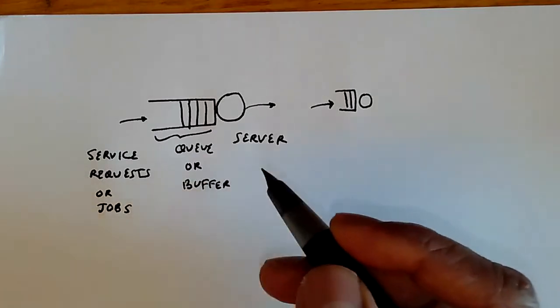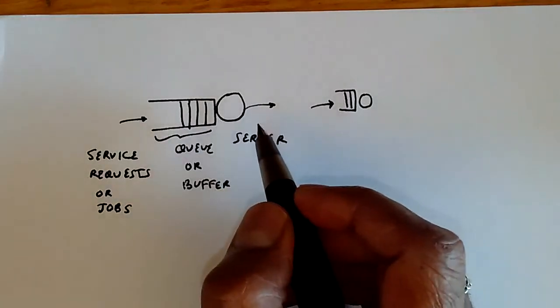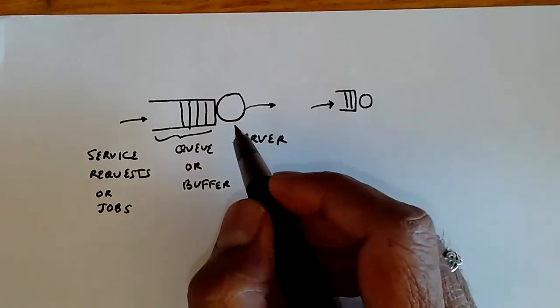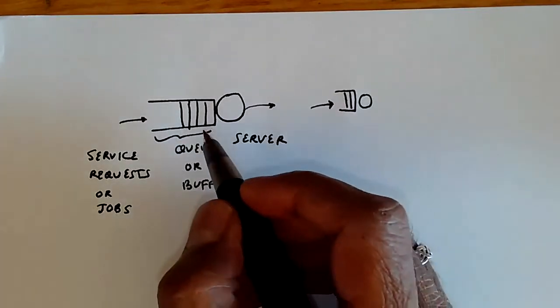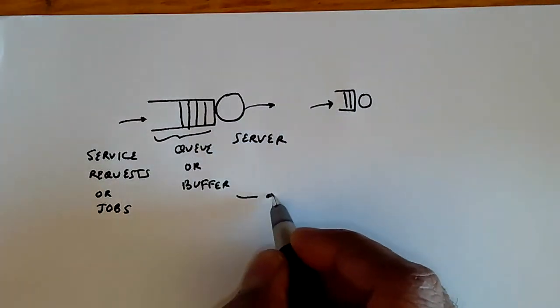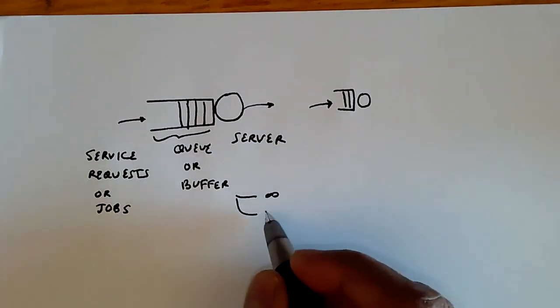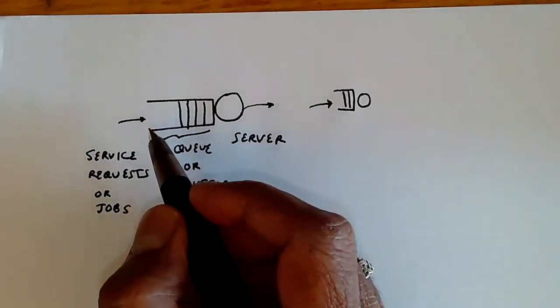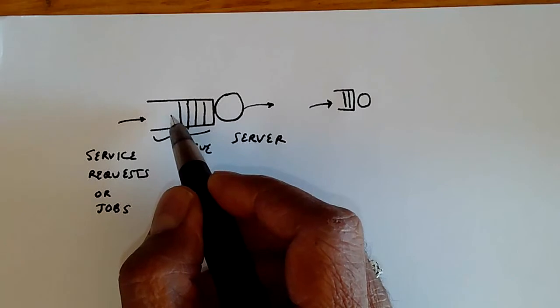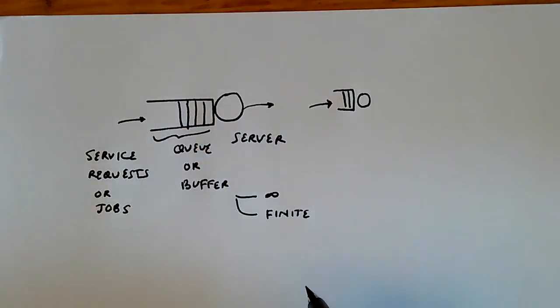And they're in the buffer because at the time that they arrive, the server is busy and so the service request is either going to be dropped or put into a buffer. The buffers can be infinite with this idealization or they can be finite. And if they're finite, then at some point arriving service requests will not have space in the queue and they will be dropped.